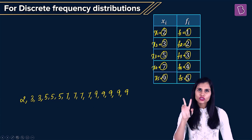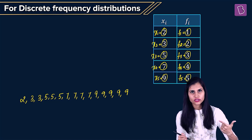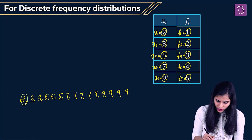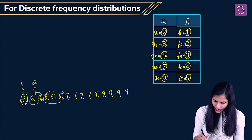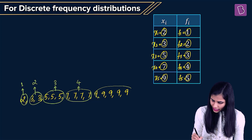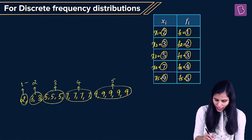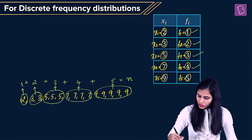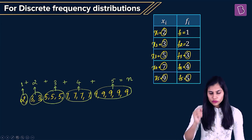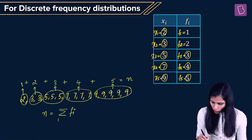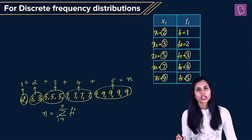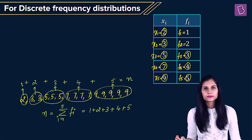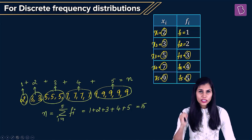In order to compute the mean, I need two things: number of observations and sum of all observations. In this data set, the total number of observations is: 1 two, 2 threes, 3 fives, 4 sevens, and 5 nines. So 1+2+3+4+5 is the total number of observations, which is F1+F2+F3+F4+F5. Hence, the number of observations is nothing but the sum of all frequencies, which here is 1+2+3+4+5 = 15. So there are 15 observations in this data set.